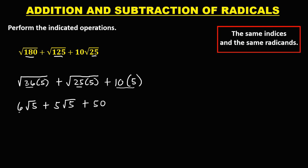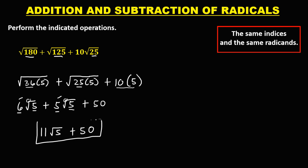We also have 5√5 from √(25 × 5). We can combine the 6 and 5 outside because they have the same indexes and the same radicands. So 6 plus 5 is 11, then copy √5, then plus 50. So the final answer is 11√5 + 50.